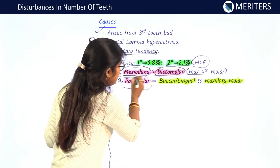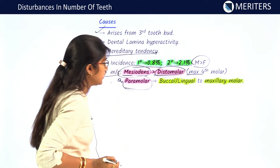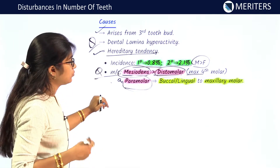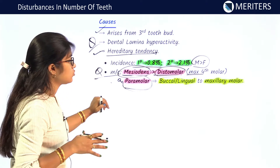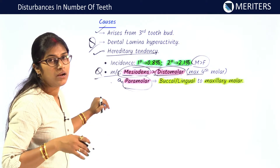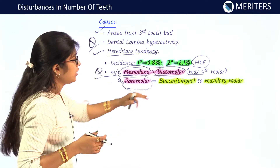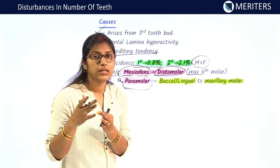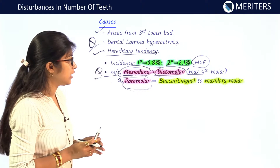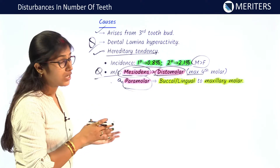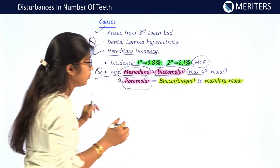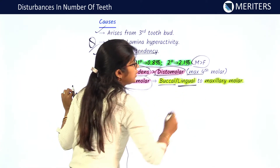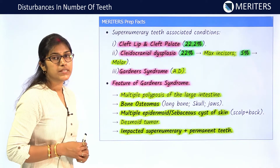You should be able to differentiate between distomolar and paramolar. Distomolar is the maxillary fourth molar — it has erupted distal to the maxillary third molar. A paramolar erupts either buccal or lingual to the maxillary molar.